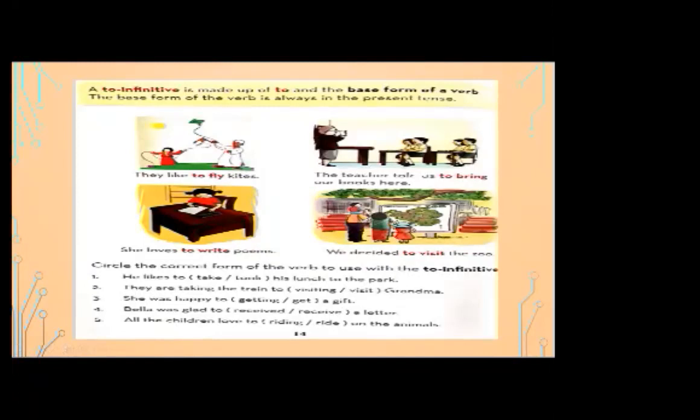'Our books here' are the objects. In the third sentence, 'she' is the subject, 'loves' is the verb (an action word), 'to write' is the infinitive form, and 'poem' is the object. In the fourth sentence, 'we' is the subject, 'decided' is the past form of the verb, and 'to visit' is the infinitive form. 'The zoo' is the object.